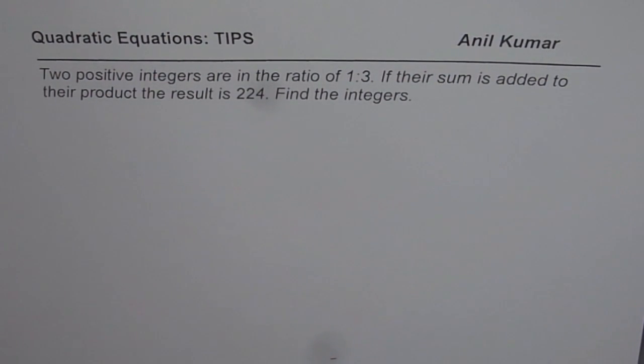Two positive integers are in the ratio of 1 is to 3. If their sum is added to their product, the result is 224. Find the integers.